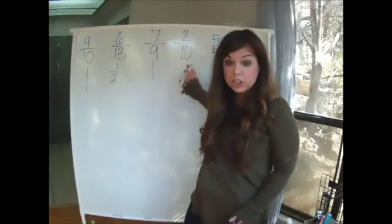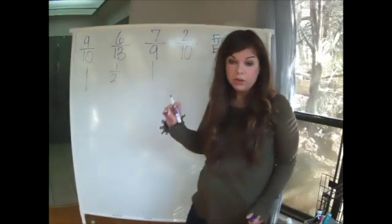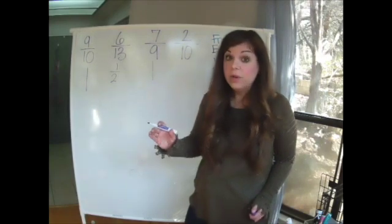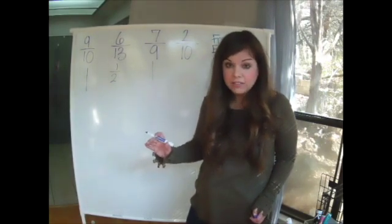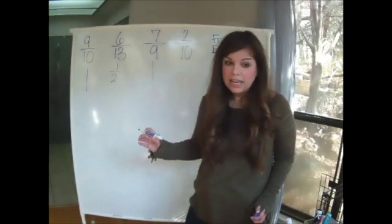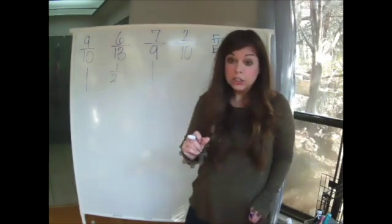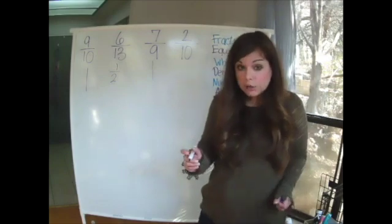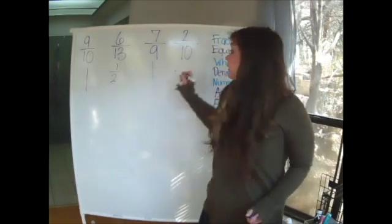The last one, two out of 10. Now, five out of 10 would give me a half and 10 out of 10 would give me a whole. So two out of 10 is pretty little. So I'm going to say that this is closest to the benchmark zero.